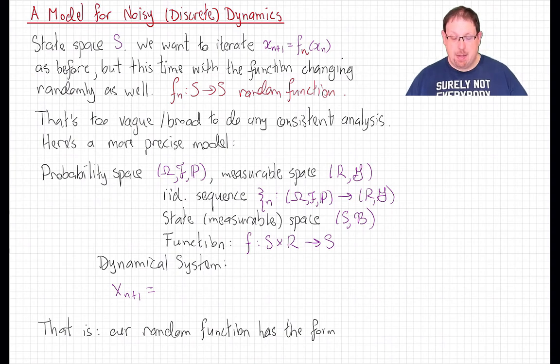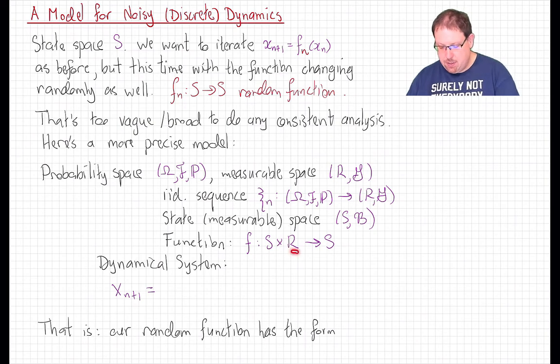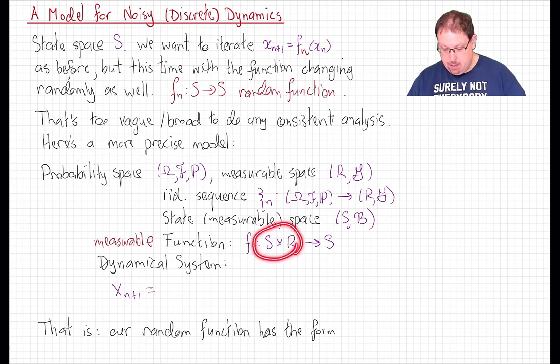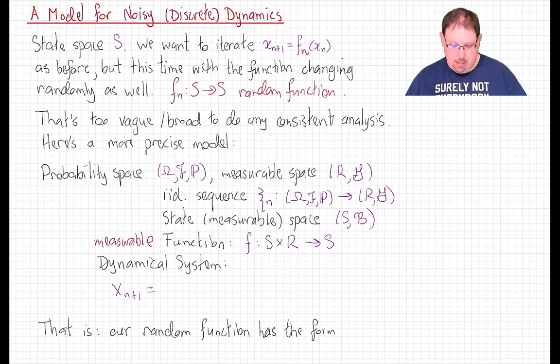Because we know that our functions are going to be pretty rough when we add some noise, and so we'll have to deal with measurable functions, not continuous ones. And our dynamics is going to be mediated by a function f, like before from S to S, but it's going to be allowed to have random input. That is, it's a function of two variables, both the state space variable and the auxiliary random input variable where the ξ_i's live, and then takes values in S. It's going to have to be a measurable function in order for all of this to work.